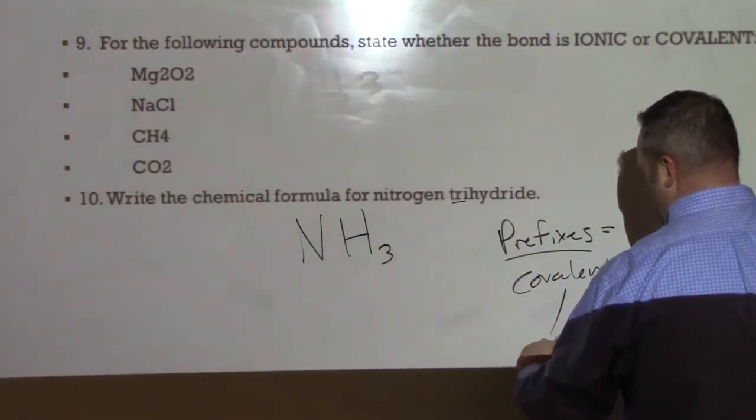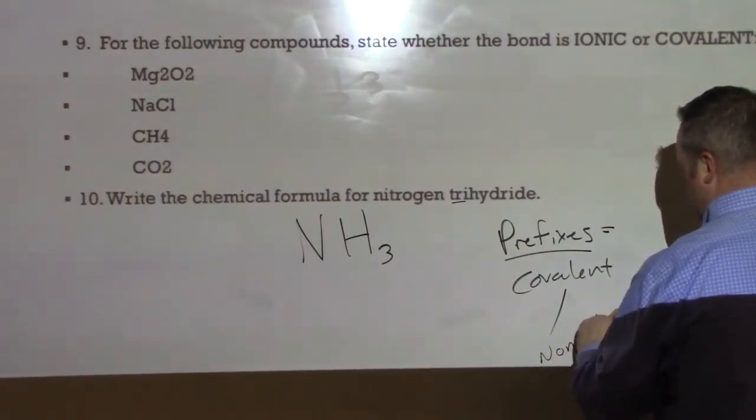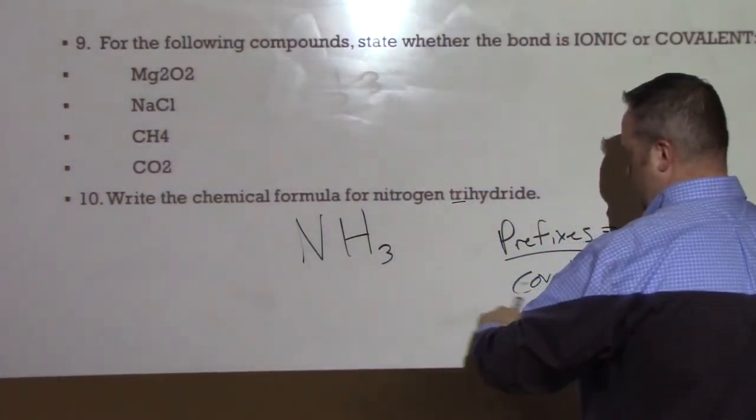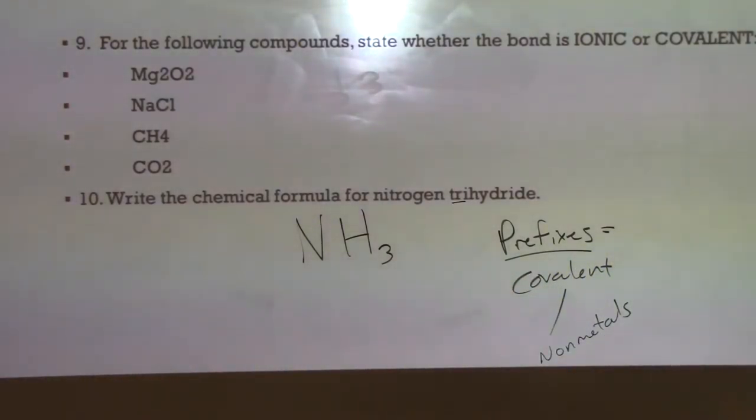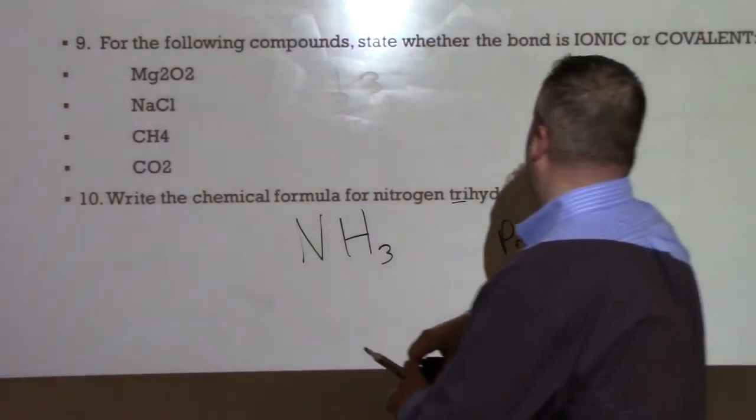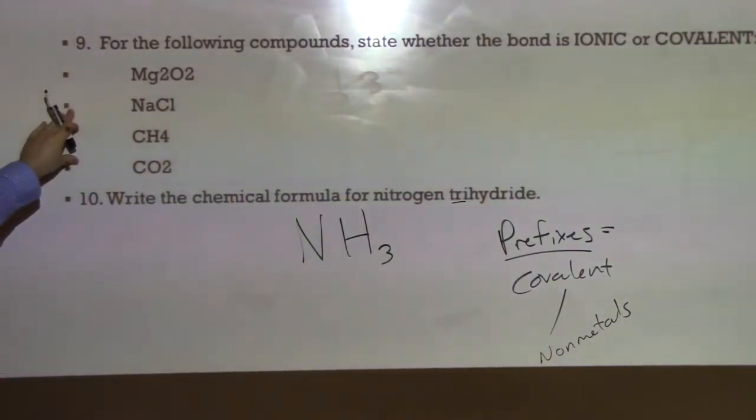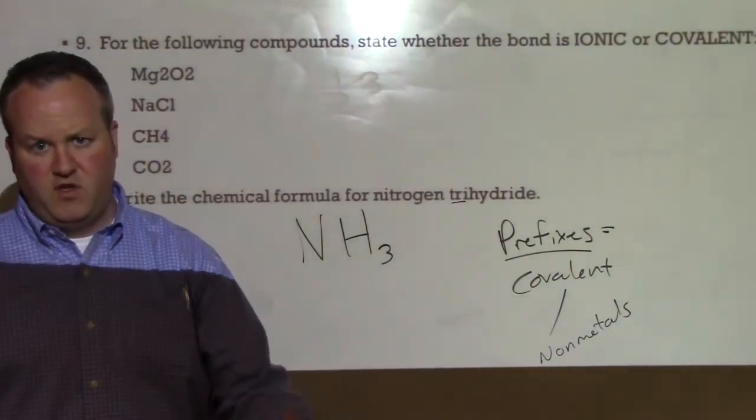Again, you use the prefixes for covalent bonds only. And remember, the covalent bonds are between nonmetals. What we have going on is we have nonmetals that are sharing their valence electrons. Now, for ionic bonds between a metal and a nonmetal, we don't use the prefixes because there's only one way they can come together.